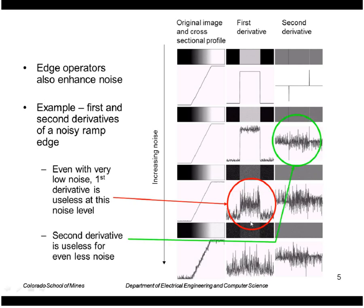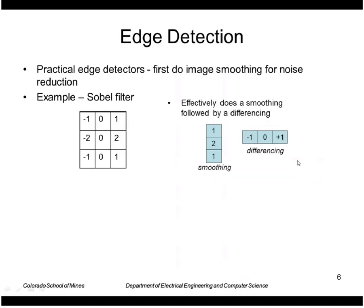At even a lower level of noise, the second derivative is even worse. So to get around that, the edge operators have to do smoothing prior to differentiation.